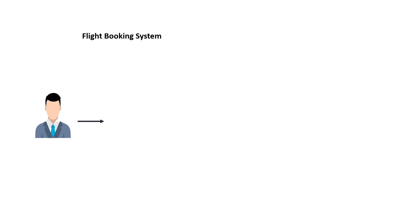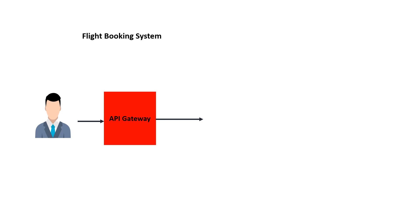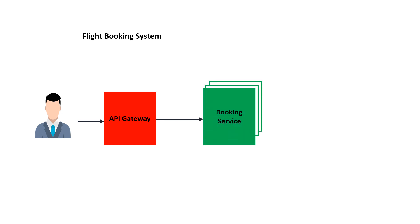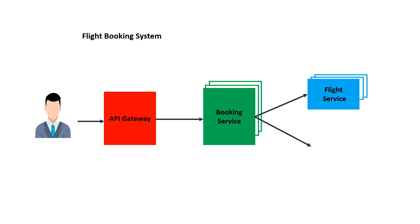Consider an example where a user wants to do a booking in a flight system. As part of this, a request first comes to the API gateway, then from the API gateway the request routes to the booking service. It creates a booking reference number and then invokes the flight service to update the seat details. The booking service also invokes the payment service to process the payments. As this is a microservice architecture, we are going to call one or more services from one service.